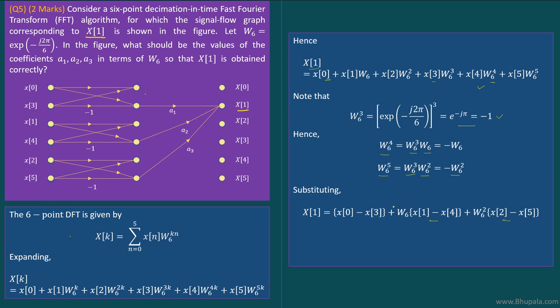Now if you look at this butterfly diagram, we are almost there. The first term, X(0) - X(3), is here. So here you will get X(0) - X(3), and that fellow is multiplied with a1. So we directly got X(0) - X(3), and hence this a1 should be equal to 1.